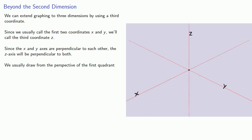And we usually draw from the perspective of the first quadrant. Wait, no, that's because the plane is split into four regions, we call them quadrants. Now, space is split into eight regions, so we'll call this the first octant.